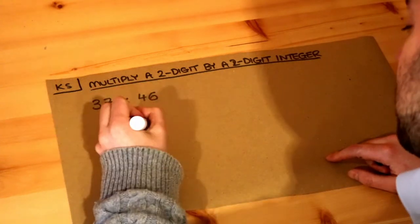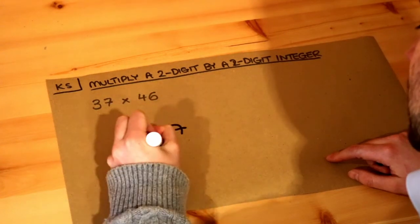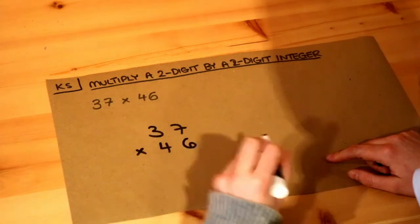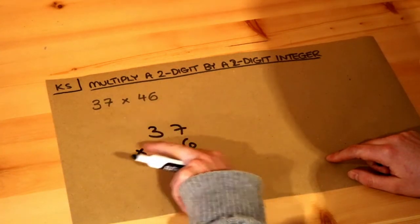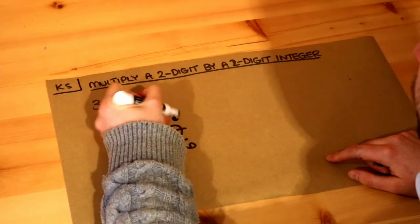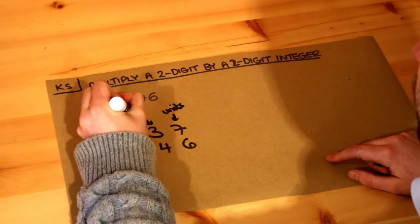First, we arrange the numbers using column multiplication. We arrange 37 and 46 into columns where the rightmost column is the units column and the next column is the tens column.